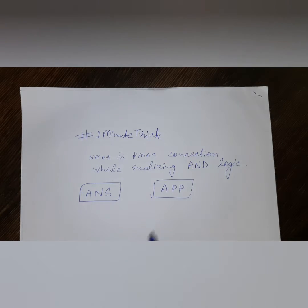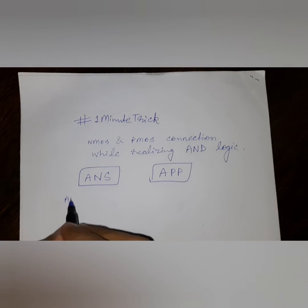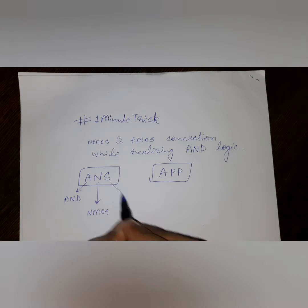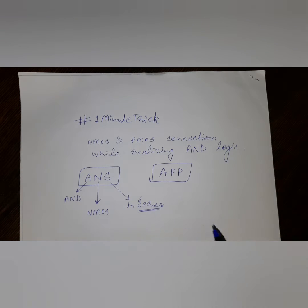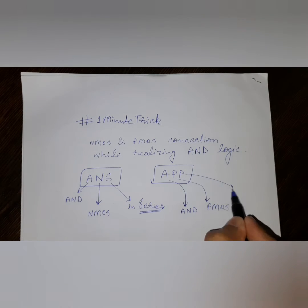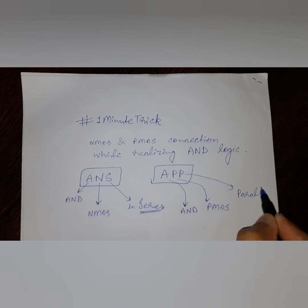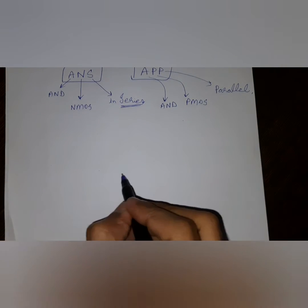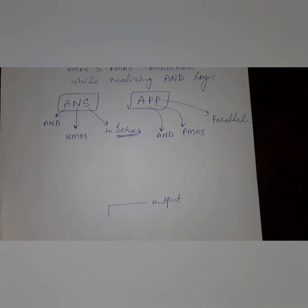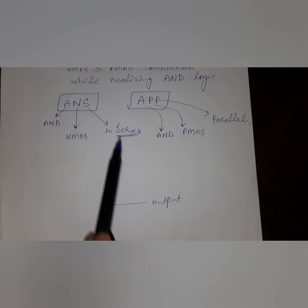So these are the two trick words: 'ANS' like 'answer' and 'APP' like 'an app.' ANS stands for AND — we have to connect NMOS in series. APP stands for PMOS needs to be connected in parallel. So when we have to realize AND logic, here's the output and the pull-down network.